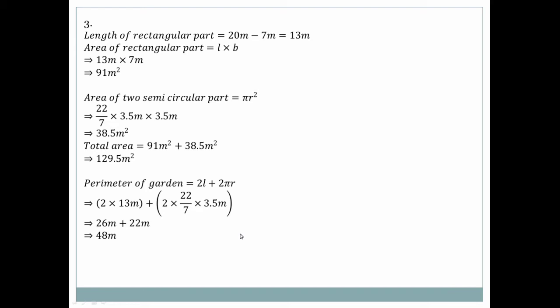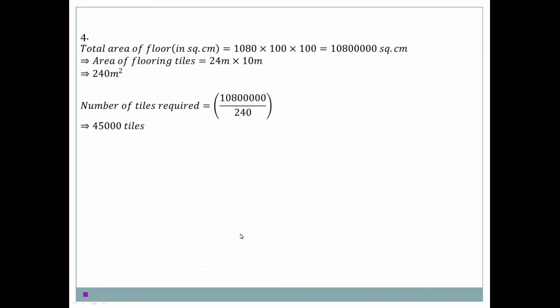Question number 4: Unit conversion — 1 meter square = 100 × 100 = 10,000 square centimeters. For flooring tiles, room is 24 meter × 10 meter = 240 square meters. Number of tiles required is then calculated accordingly.